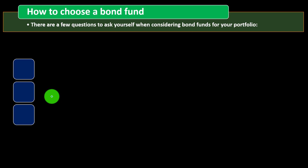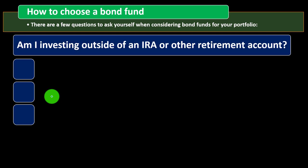How to choose a bond fund: a few questions to ask yourself. Am I investing outside of an IRA or other retirement account? Many people have a misconception about retirement accounts — they think the IRA is its own separate investment. It's not. The IRA or 401k is just an umbrella — the actual investment tool, such as a bond fund, is the same kind of thing. You choose to put it under the retirement account umbrella if you have the capacity and want the tax benefit.